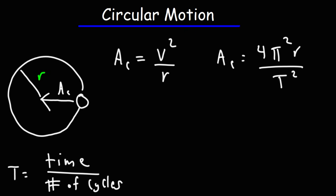For instance, if a ball takes 50 seconds to go around the circle 10 times, 50 seconds divided by 10, its period is 5 seconds. It takes 5 seconds to go around the circle just once. That's how you can calculate the period.